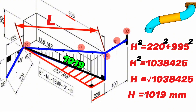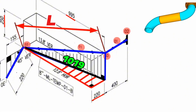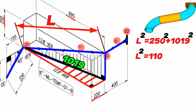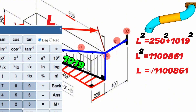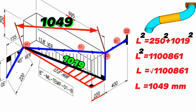Let's mark the hypotenuse of the vertical right triangle with the letter L. Using the Pythagorean theorem again, L squared equals 250 squared plus 1019 squared. The square of the hypotenuse equals 1,100,861. Therefore L equals the square root of 1,100,861. Using a scientific calculator, we find that L equals 1049 millimeters. This is the length of the hypotenuse of the vertical right triangle, and also the center-to-center distance between the elbows that we needed to find.